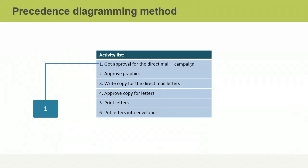A key tool and technique when sequencing activities is the precedence diagramming method. It's what you use to create a project schedule network diagram, the backbone of the schedule. Once you've identified the types of dependencies among activities, the next step is to represent these dependencies in a schedule network diagram. We're going to use the direct mail campaign activity list again as our starting point.